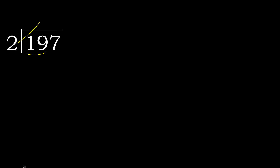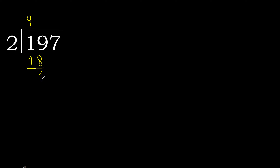2 multiplied by which number is nearest to 19 but not greater? 2 multiplied by 9 is 18. 18 is not greater. 19 minus 18 is 1. Next.